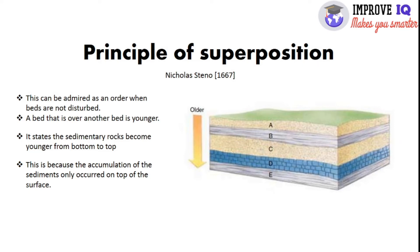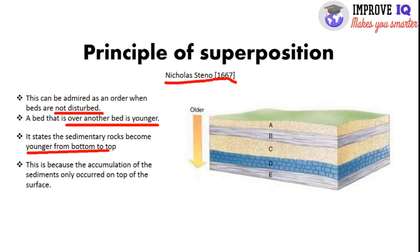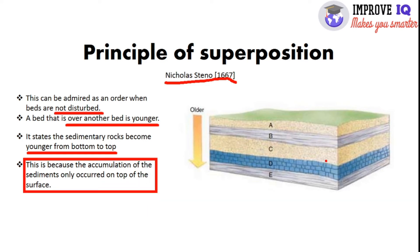The second is the principle of superposition, given by Nicolaus Steno in the years 1669 and 1667. This principle applies when beds are not disturbed — we can take all beds in order when they are in an undisturbed manner. The main fact is that a bed over another bed is always younger. Sedimentary rocks become younger from bottom to top, because accumulation of sediments only occurs on top of the surface.